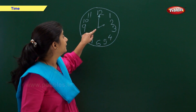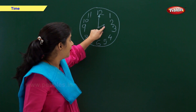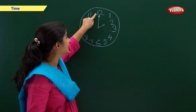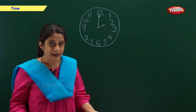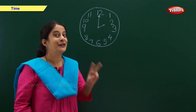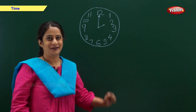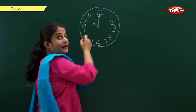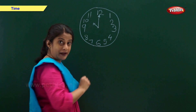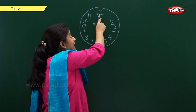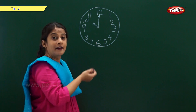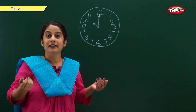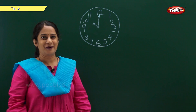Now the hour hand is on 2 and the minute hand is on 12, so we say the time is 2 o'clock. Now the hour hand is on 10 and the minute hand is on 12, so we say the time is 10 o'clock.